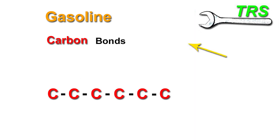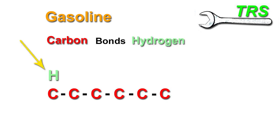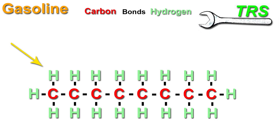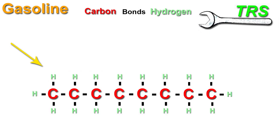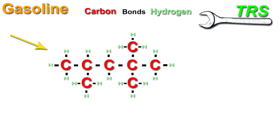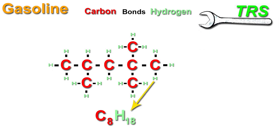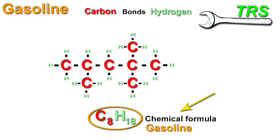Also bonded to each of the carbon atoms are hydrogen atoms, surrounding them very much like this. Unlike a molecule of diesel fuel, which is shaped more like a chain, the molecule of gasoline is more compact. It still consists of carbon and hydrogen but forms a slightly different structure. Because the molecule has eight carbon atoms, it's denoted C8, and because it has 18 hydrogen atoms, that's H18. Together, C8H18 is the chemical formula of gasoline fuel.